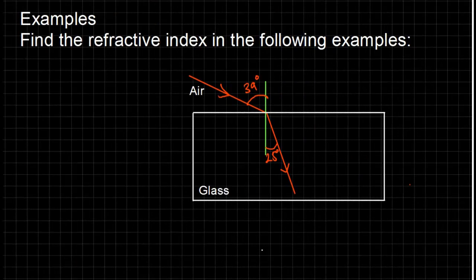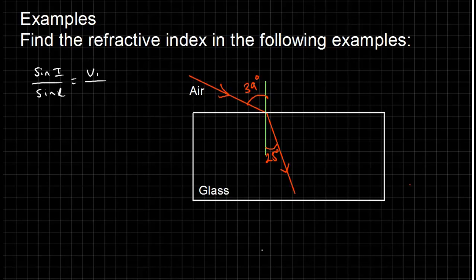Here's an example: find the refractive index in the following example. My advice would be every single time you see the question, write the entire formula — whether you think you need it or not. So it is sine i over sine r is equal to v1 over v2, is equal to mu.